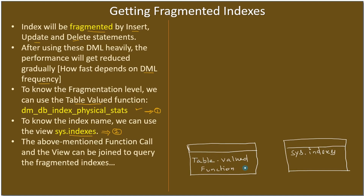So we have two entities: one is the table-valued function that returns a table of data, and the other is the sys.indexes view which also has rows and columns of data. Both will have an index_id column, which we will use as the mapping (join) column. From the table-valued function we get the statistics, and from sys.indexes we get other index-related details.